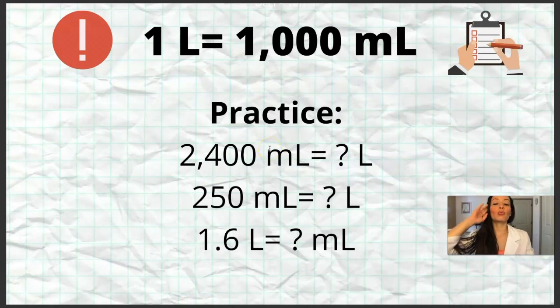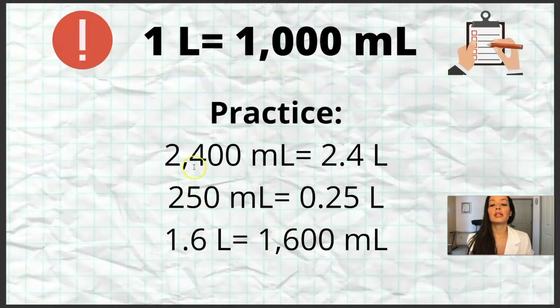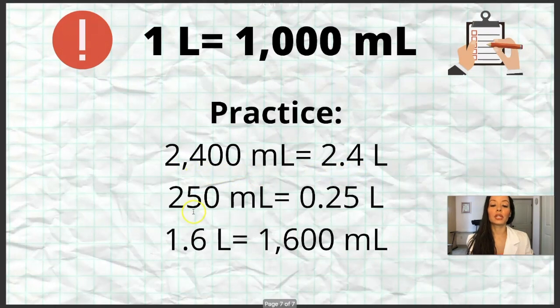So we're going to be dividing by a thousand or moving the decimal three places. Decimals here. 1, 2, 3, 2.4 liters. Then we're moving from milliliters again to the left. So 1, 2, 3, 0.25 liters. We're multiplying by a thousand. So 1, 2, 3, 1,600 milliliters. Let's check our answers. Yay. 2,400 milliliters is the same thing as 2.4 mls. 250 milliliters is equal to 0.25 liters and 1.6 liters is equal to 1,600 milliliters. Good job. I'm sure you got that right.